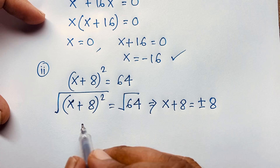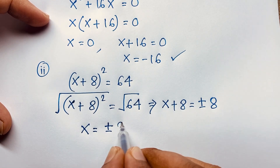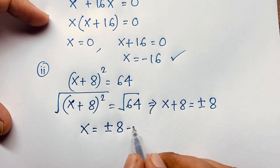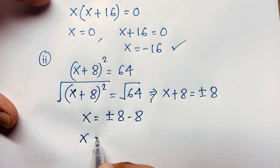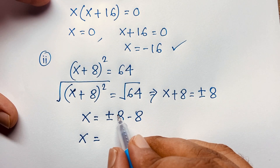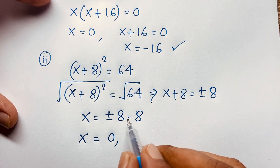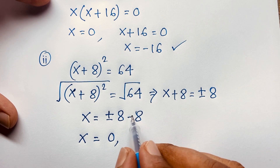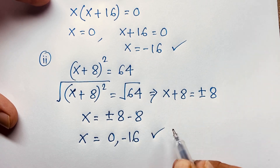So x = ±8 − 8. When we take positive 8: 8 − 8 = 0. When we take negative 8: −8 − 8 = −16. So our final solution is x = 0 and x = −16.